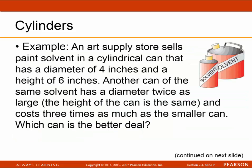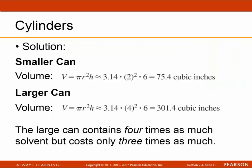An art supply store sells paint solvent in a cylindrical can with a diameter of 4 inches and a height of 6 inches. Another can of the same solvent has a diameter twice as large, the same height, and costs three times as much as the smaller can. Which is the better deal? The volume of the smaller can is 75.4 cubic inches and the larger can is 301.4 cubic inches. The large can contains 4 times as much solvent but costs only 3 times as much, so that's the better deal.